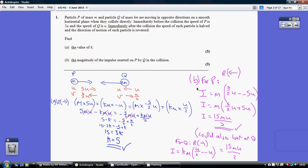Now for part B, the size of the impulse is mass times the change in speed.